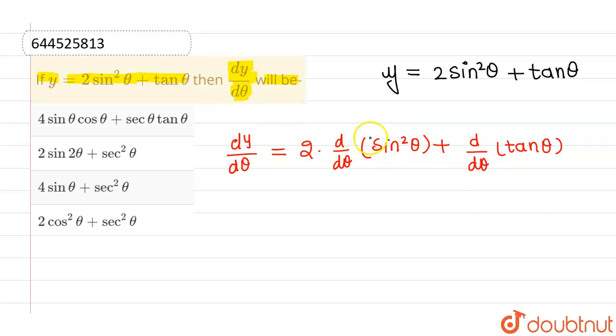Now we know that differentiation of sin²θ with respect to θ is nothing but 2sinθ times cosθ.